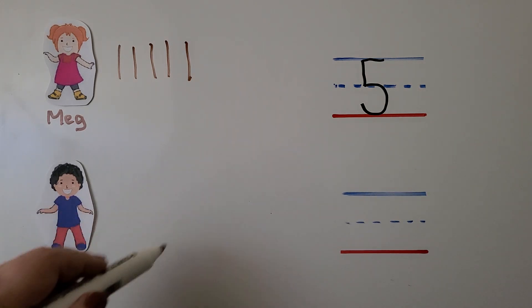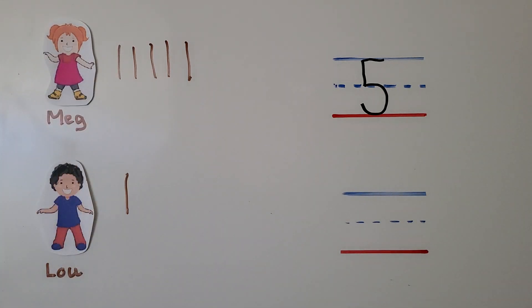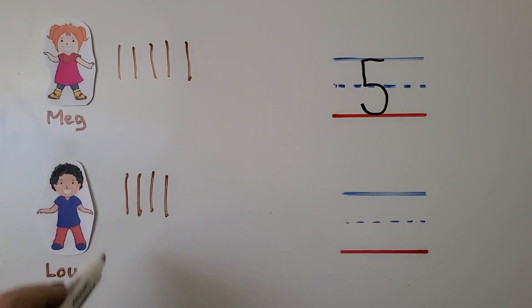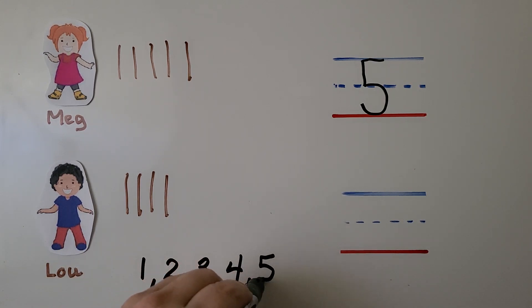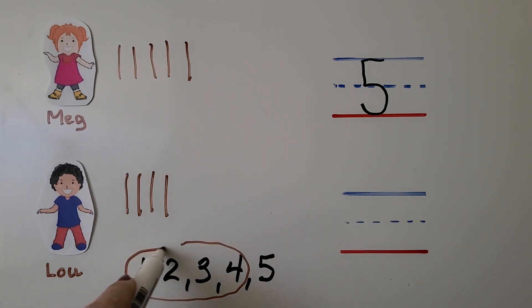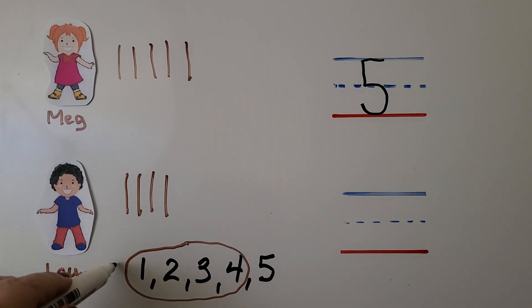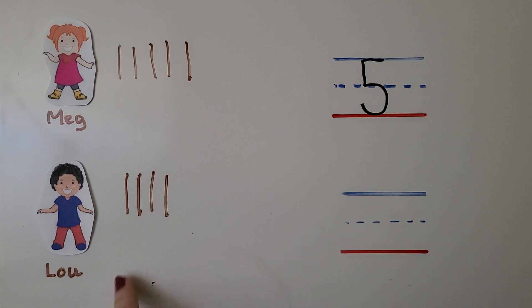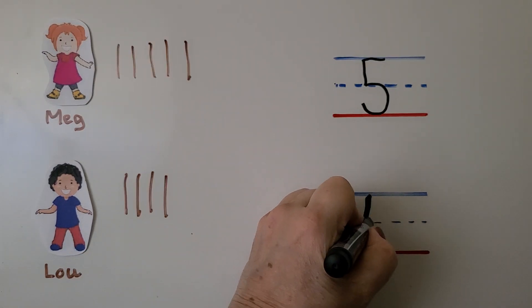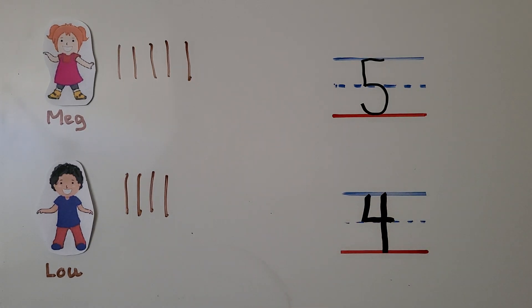That means Lou could have zero crayons, because that's less than five. He could have one, two, three, or four crayons — any of those are less than five. In counting order we have one, two, three, four, then five. All of these numbers are less than five because they come before five in counting order, and zero is also less than five. So any one of these answers is correct. We could say he has four crayons, and draw four lines. Any number before five in counting order would be a correct answer.